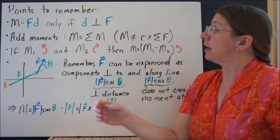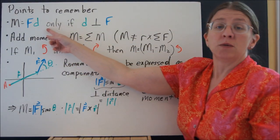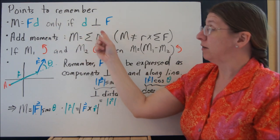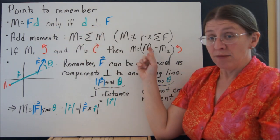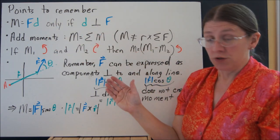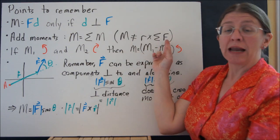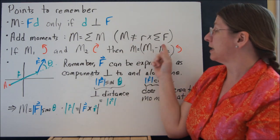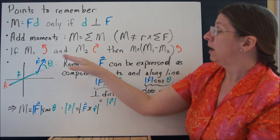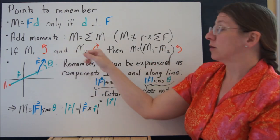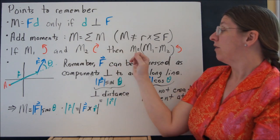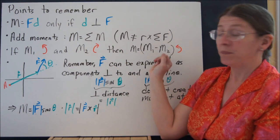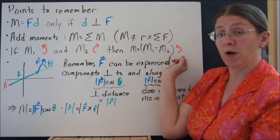A couple points to remember as you're going along in here. M is equal to FD only if D is perpendicular to F. You can add the moments, like vectors. But you can't necessarily add all the forces and then take a single cross-product. That usually doesn't work. It only works if all of these forces act at the same point. If M1 is going counterclockwise and M2 is going clockwise, then you're going to need to subtract them as you get to figuring out what your total moment is.